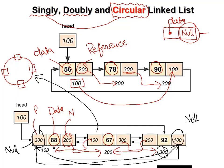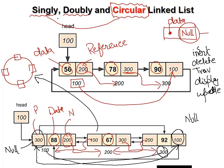All operations — inserting data, traversing, displaying, and updating — will work exactly the same as we saw in singly and doubly linked lists separately. The only addition is: in the last node, the first node's reference will come, and in doubly form, the last node will have the first's reference and the first node will have the last's reference, forming this circle. I hope you understand the concept.